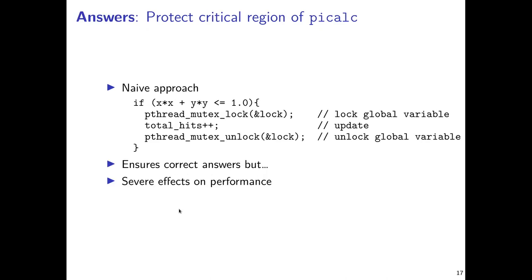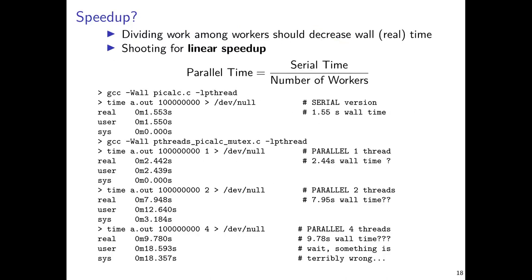This ensures correctness, but the great cost we pay is a large amount of contention over those locks. As all four threads compete for locks, our performance goes down the drain — locking and unlocking becomes the central work being done by these threads, and our drive toward performance is thwarted.